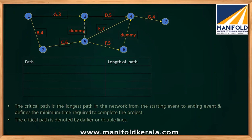There can be plenty of paths in a network. We can see that A-D-G is a path. Similarly, B-C-E-G is a path, and B-C-F-G is a path. The paths can also be expressed in terms of node numbers: 1-3-4-7 is A-D-G; 1-2-5-4-7 is B-C-D-G; 1-2-5-6-7 is B-C-F-G. You can represent paths in terms of activities or in terms of nodes.